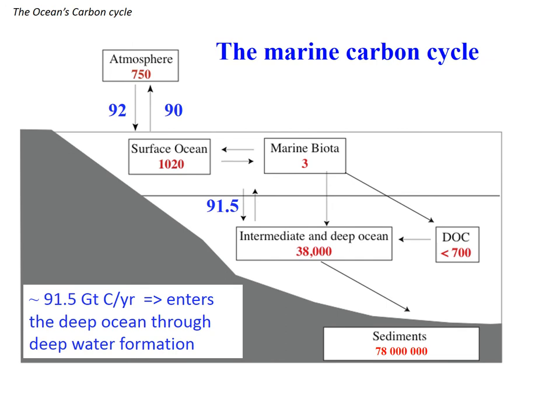Why has the surface ocean got less carbon than the deep? It's because of fluxes between the buoyant surface layer and the deep ocean. It's hard to mix between the two, but there is a way of transferring carbon — mostly through marine biota. Marine biota is a very small component (about 3 gigatons of carbon vs. 1,000 gigatons dissolved in the surface ocean), but it has fluxes going only down into the deep ocean with no return flux — only a mixing process that moves things both ways.